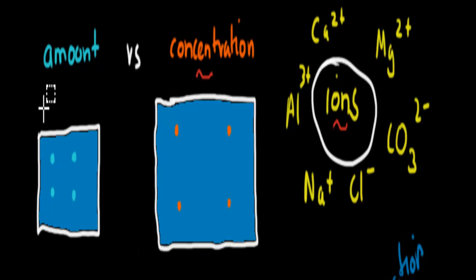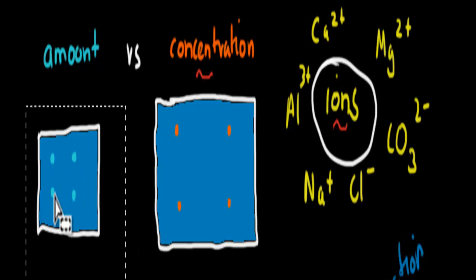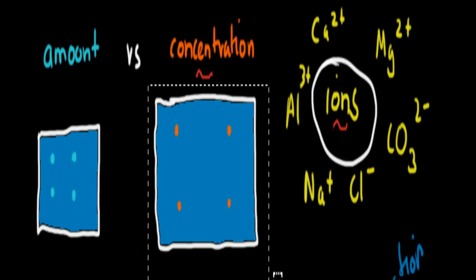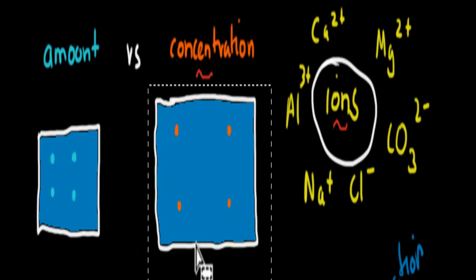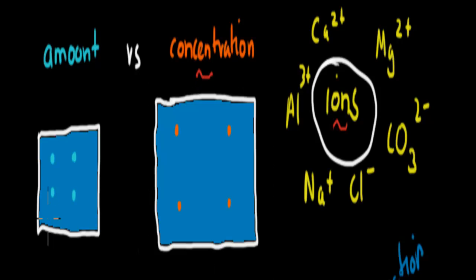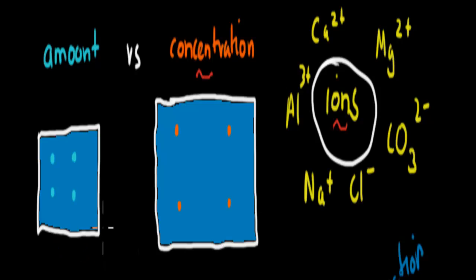For example, if you look at this container, this would have four particles of ions, whereas the same one over here has four as well. Obviously the concentration on the one on the left would be higher than the one on the right. The right one would be more dilute, the left one would be more concentrated, because it's the same amount but in different volumes.